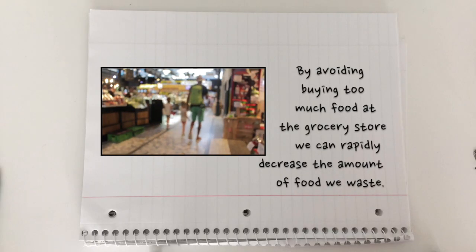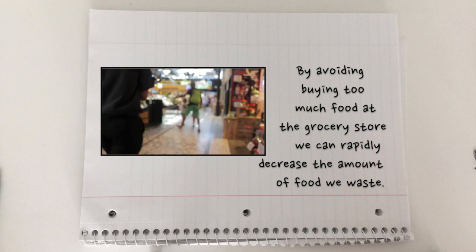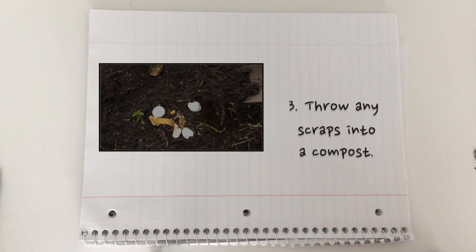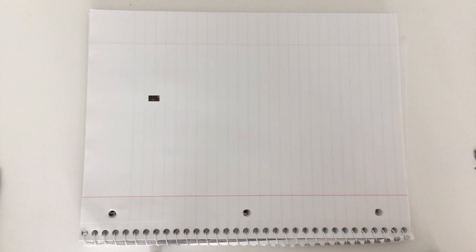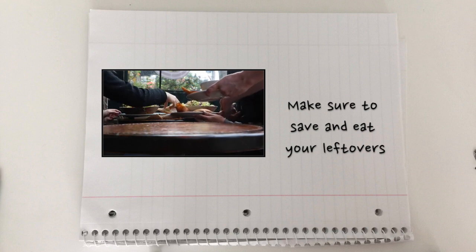So, how can we prevent food waste? We can start by avoiding buying too much food at the grocery store, throwing away any scraps into the compost, and remembering to save and eat your leftovers.